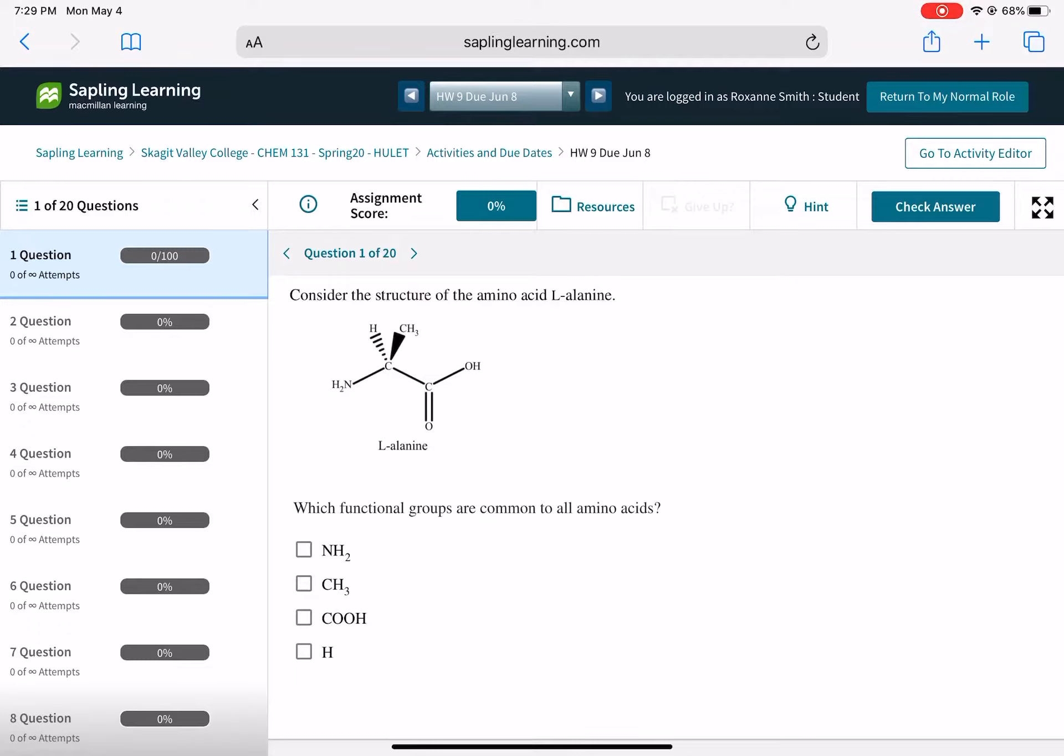And this structure of the amino acid is drawn in a way that looks really weird. This is not the standard way that we draw amino acids. So just kind of ignore the drawing and answer the question underneath it. But what is common, which of those functional groups is common to all amino acids?